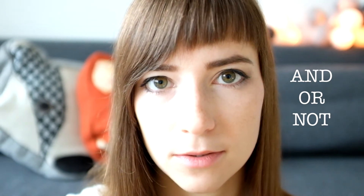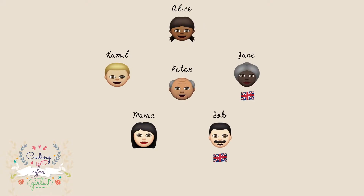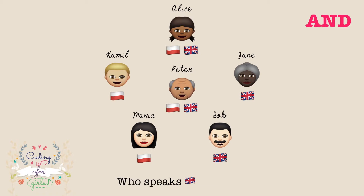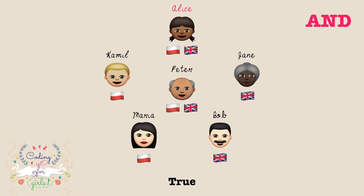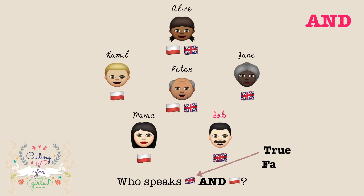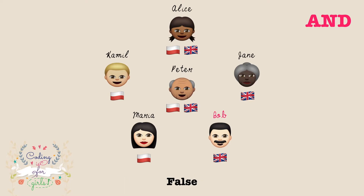For the AND operation, both the left-hand side and right-hand side need to be true for the whole expression to be true. Let's think about it in terms of sets — say we have a group of people, some speak English, some speak Polish, and some speak both. If we check Alice: does she speak English? Yes. Does she speak Polish? Yes. So the result is true — Alice speaks both English and Polish. But if we check Bob: does he speak English? Yes. Does he speak Polish? No. The result is false — Bob does not speak both.